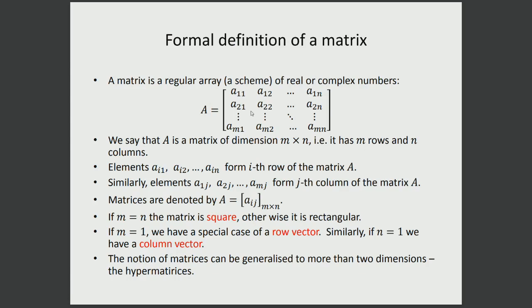We defined what a matrix is: an array with elements such as A11, A12 on the first row. A matrix A has m rows and n columns, so we say A has size m by n, meaning m times n elements in total. These elements can be either real or complex numbers.